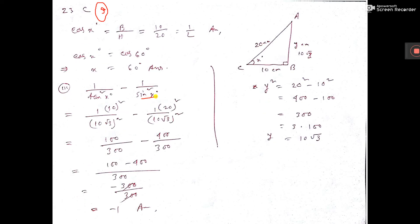Now see, sine - sine means perpendicular, that is 10 root 3 by hypotenuse, hypotenuse 20. But that is written above in the numerator directly. So whole square also there, so give whole square.